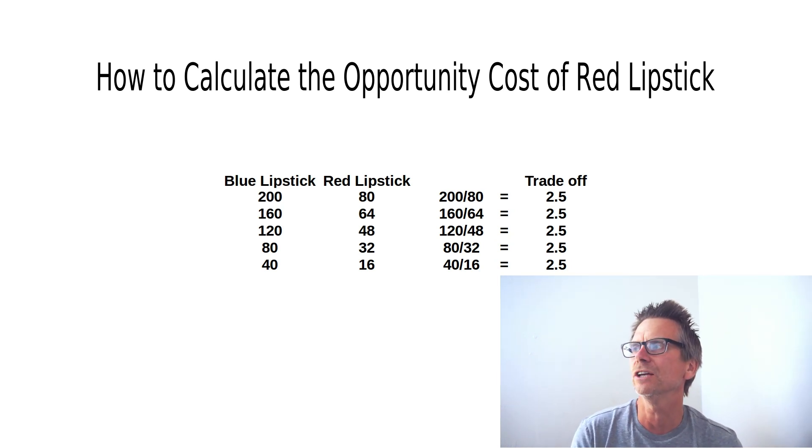The ratio in this case is 2.5. You're going to have to reduce production of blue lipstick by 2.5 sticks in order to get one stick of red lipstick.